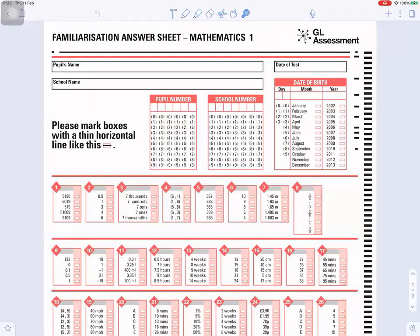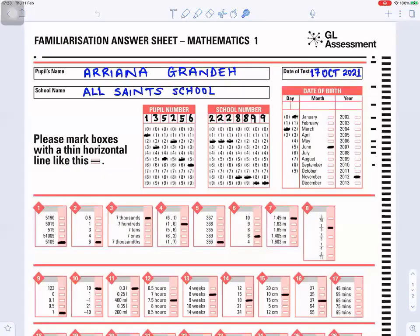So when you go for your math exams, this is what the math answer sheet would look like for the mathematics answer sheet. You have to fill in pupil's name, your school name, date of test, pupil number, school number, your date of birth where you fill your day, month, and year like this. So here are the answers which I completed for the first 10 questions. Familiarization answer sheet, mathematics 1, GL assessment for 11 plus exams. Very important, this information I filled in correctly. Pupil's name: Ariana Grande. Date of test: 17 October 2021. School name: All Saints School.